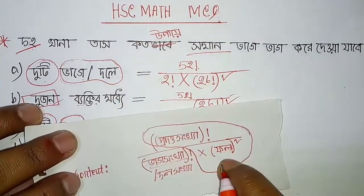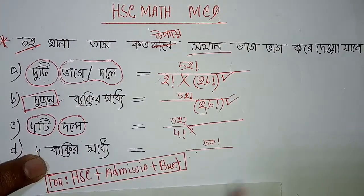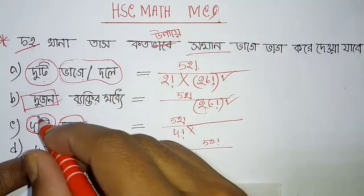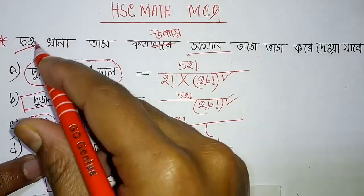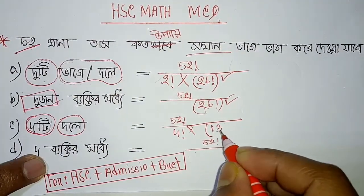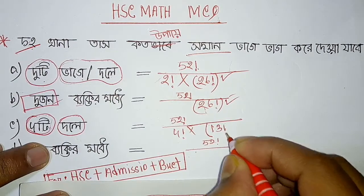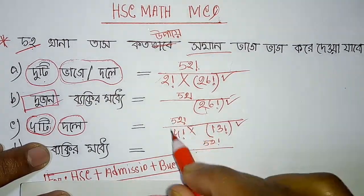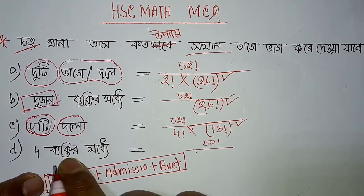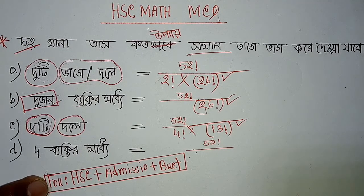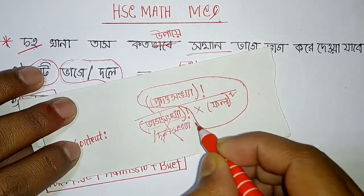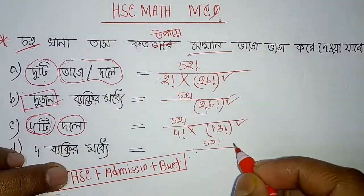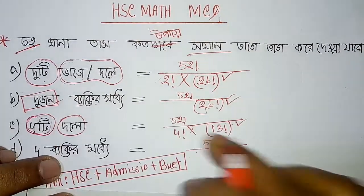And then, what comes after multiplication? False factorial square — factorial square. Then after that, what factorial? The factorial after that.